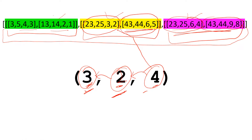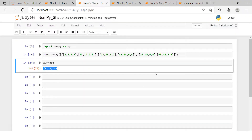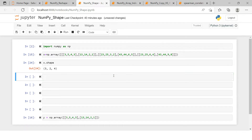So to recap: the count of numbers in the output tells you the dimension of the array — we have three numbers, so it is a three-dimensional array. Each number represents the elements in each dimension starting from the left. The leftmost number represents the outermost array with three elements, then the array inside has two elements, and the innermost array has four elements.